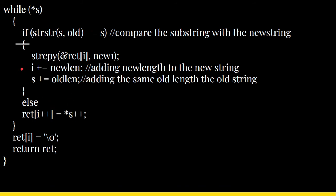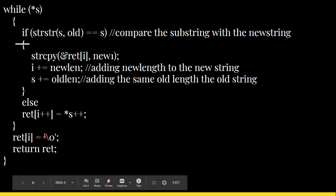In the else branch, if the old string is not found at the current position, we simply do ret[i++] = *s++, copying the character unchanged. The while loop scans from the first to the last position. At the end, ret[i] is set to '\0' (the null terminator) to mark the end of the result string, and then ret is returned to the calling function.